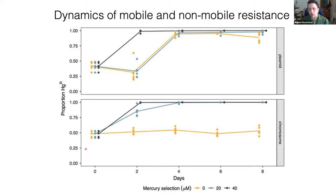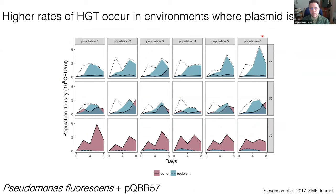Plasmids are able to spread under a broader range of selected conditions than the same genes encoded on the chromosome. The chromosomal copy of mercury resistance genes spreads only in the presence of mercury and stays at 50% in its absence, whereas the plasmid-encoded version can spread where mercury is around and also spread to fixation where mercury isn't around. That's due to the ability of plasmids to cause infectious transmission.